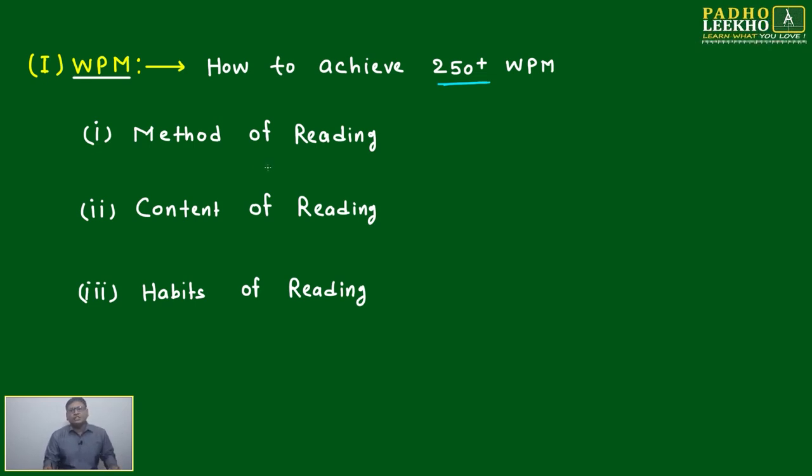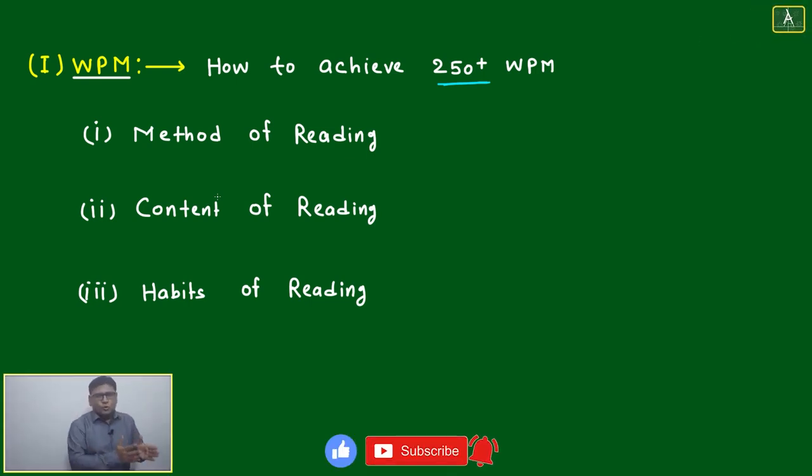Three areas you have to work on to improve your WPM: Method of reading. If you are a poor reader, one thing is sure - we are not reading properly, our method is having some problem. If we are not able to do anything properly, in that method we have some process problem.